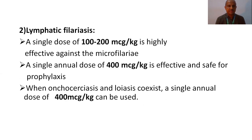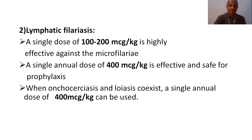The second condition: Ivermectin is useful in lymphatic filariasis. A single dose of 100 to 200 mcg per kg is highly effective against the microfilaria. A single annual dose of 400 mcg per kg is effective and safe for prophylaxis. Ivermectin can be used as a prophylactic. When there is co-existence of onchocerciasis with loiasis, a single annual dose of 400 mcg per kg can be used.